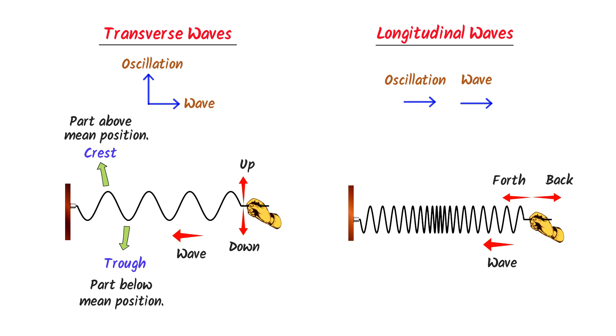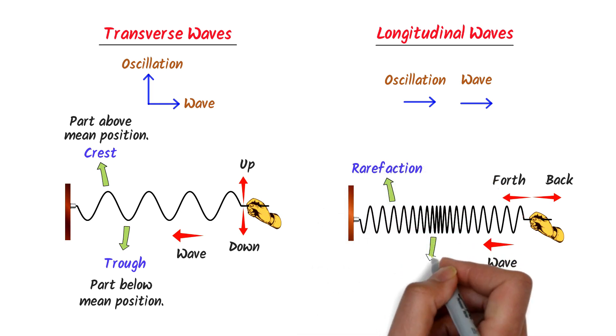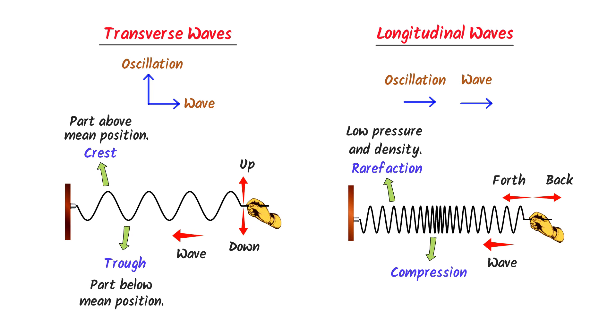This wave in the spring is called a longitudinal wave. Remember that every longitudinal wave is made up of rarefaction and compression. Rarefaction is the region of low pressure and density, while compression is the region of high pressure and density.